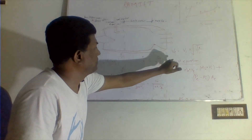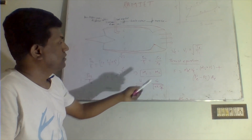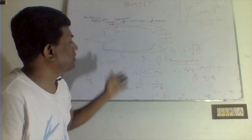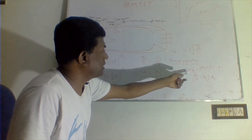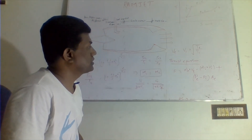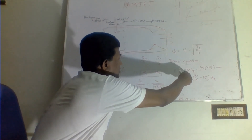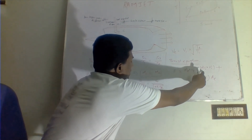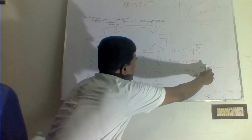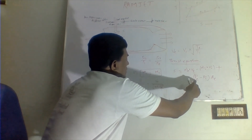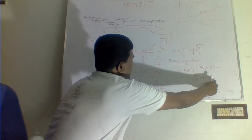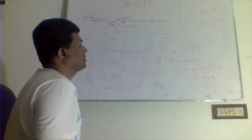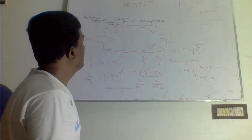The thrust equation for the ramjet engine is: F = ṁ_e · V_j − ṁ_i · V_i + (P_e − P_i) · A_e, where ṁ_e is the mass flow rate at exit (air plus fuel), ṁ_i is the mass flow rate at the inlet, V_i is the inlet velocity, P_e and P_i are exit and inlet pressures, and A_e is the nozzle exit area. This equation allows us to find the thrust developed by the ramjet engine.